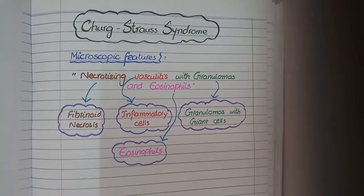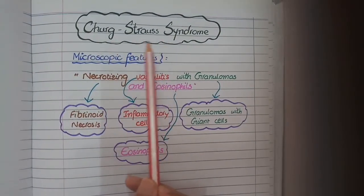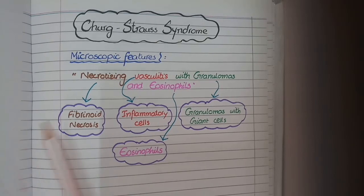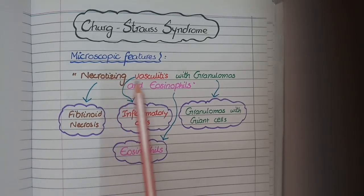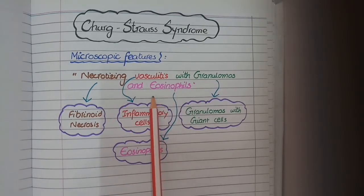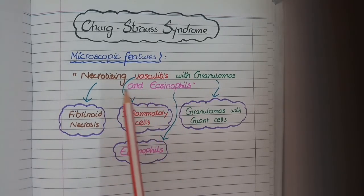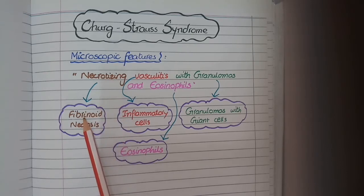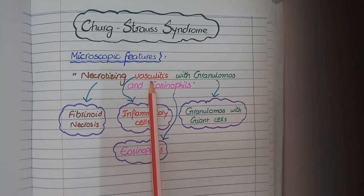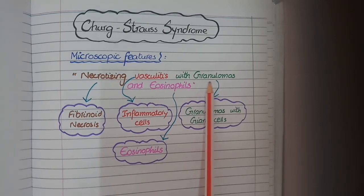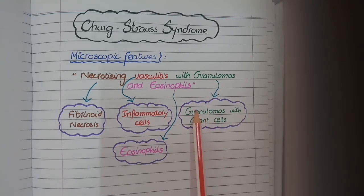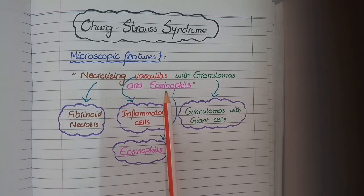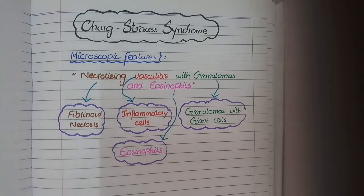The third type of small vessel vasculitis is Churg-Strauss syndrome. The keywords are necrotizing vasculitis with granulomas and eosinophils. Necrotizing means fibrinoid necrosis; vasculitis denotes inflammatory cells; granulomas means granulomatous inflammation with giant cells; and eosinophils denotes the presence of eosinophils, which is a unique distinguishing feature of this syndrome.